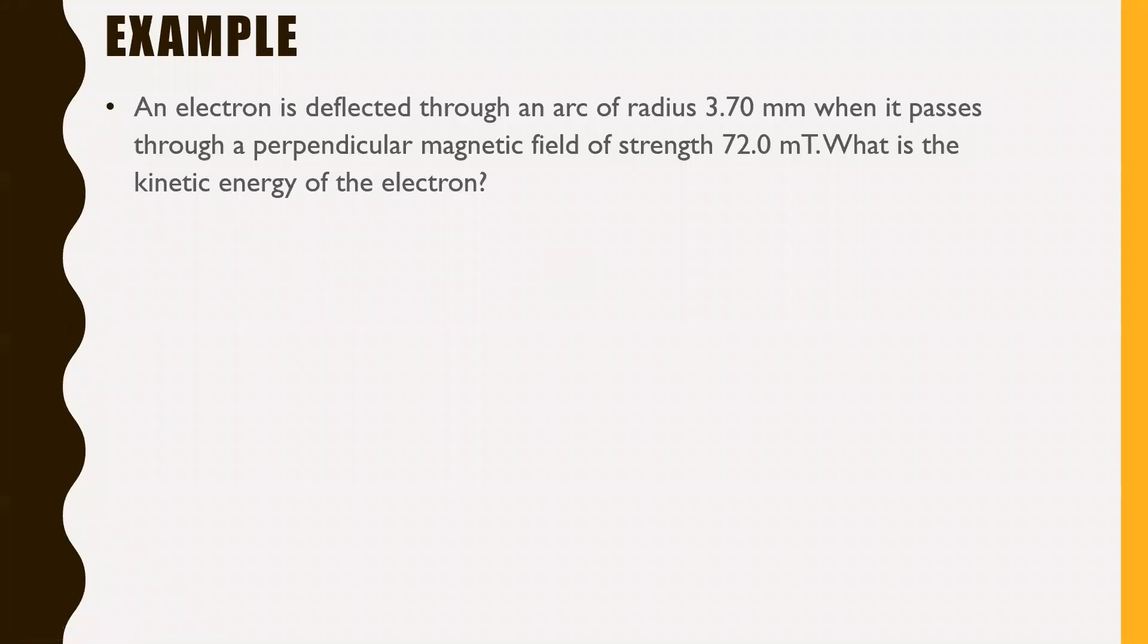So first example, an electron is deflected through an arc of radius 3.70 millimeters when it passes through a perpendicular magnetic field of strength 72.0 milliteslas. What is the kinetic energy of the electron? Pause the video here, give this one a try.